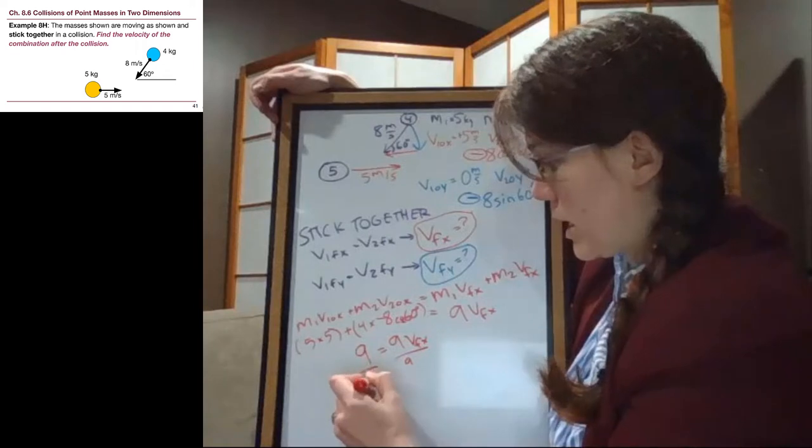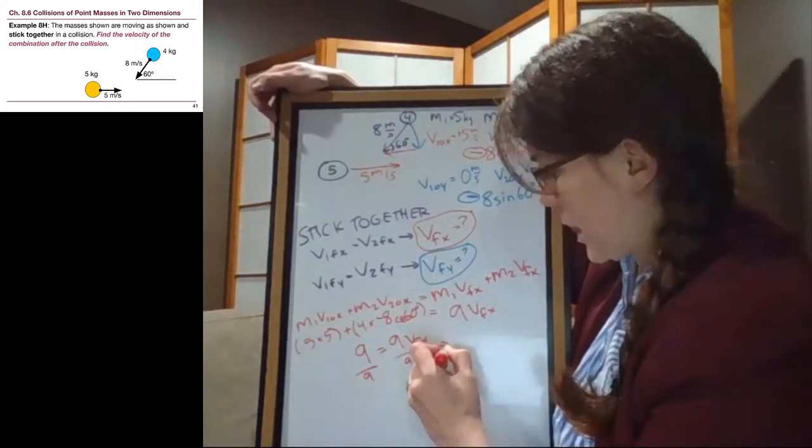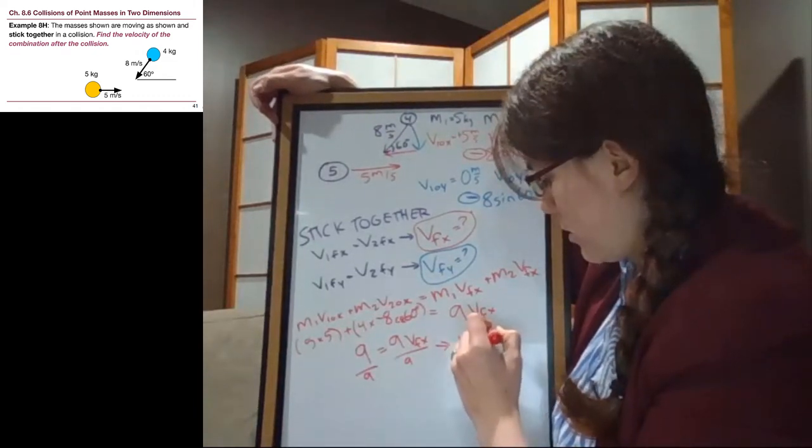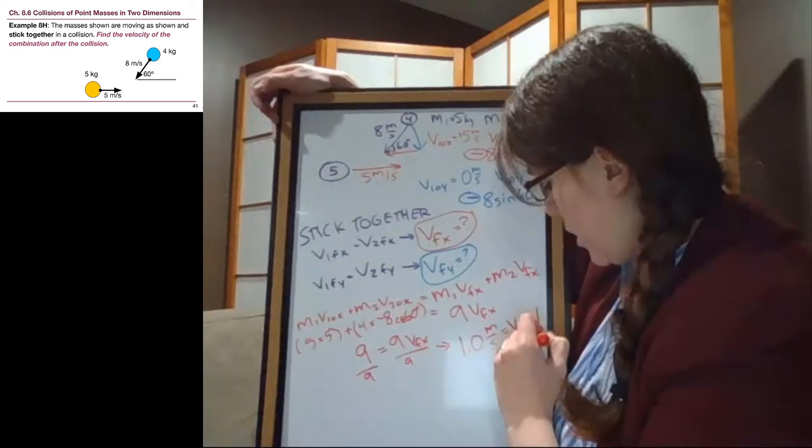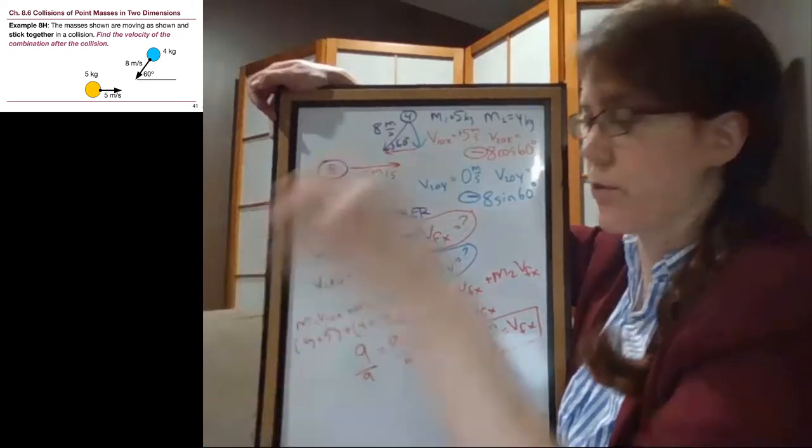So we divide both sides by 9. 9 divided by 9 is not 0. I see that sometimes as algebra mistakes. It's 1, and so we have 1.0 meters per second is our v final x. So we'll make a note of that, but we will have to use that in a final triangle.